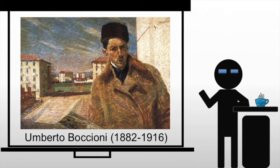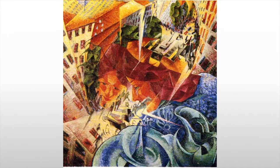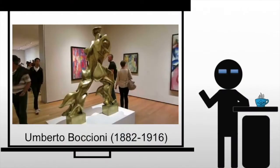Boccioni will create the definitive work of futurist sculpture. As a good futurist, he's looking at motion and at war, which you see here. But in this work, he's primarily trying to capture motion in metal — something that even Rodin tries but has a hard time dealing with.